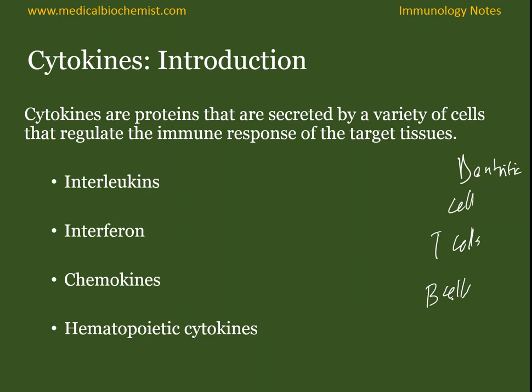These cytokines include interleukins, interferons, chemokines, and hematopoietic cytokines. Interleukins are the cytokines secreted by leukocytes and act on leukocytes. Interferons are proteins first discovered to inhibit viral replication. Chemokines are generally chemoattractants that recruit T cells or lymphocytes. And hematopoietic cytokines enhance the proliferation and differentiation of different immune cells.